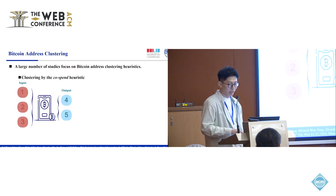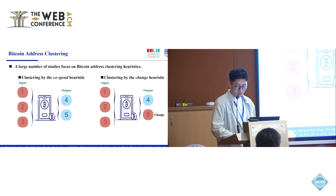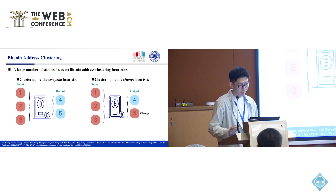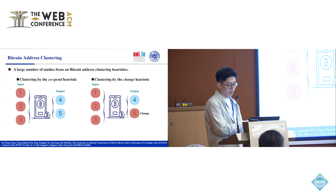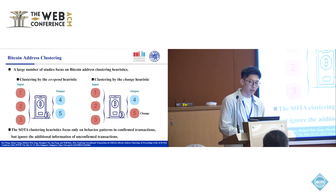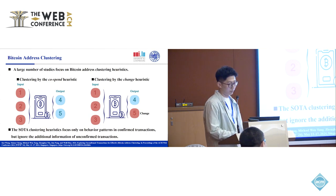These heuristics are generally categorized into two groups: the co-spend heuristic and the change heuristic. The co-spend heuristic considers that all input addresses belong to the same user. The change heuristic identifies the address used by the transaction sender to receive change. However, the state-of-the-art clustering heuristics focus only on behavior patterns in confirmed transactions, but ignore the additional information of unconfirmed transactions.